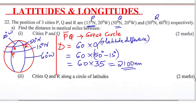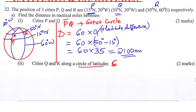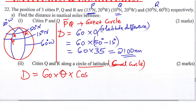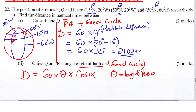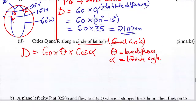Now the second part — the distance between Q and R along a circle of latitude. A circle of latitude is the small circle, so this is the distance along the small circle. Q and R are lying on the same latitude but different longitudes. The formula for distance in nautical miles is: distance equals 60 multiplied by the longitude difference, multiplied by the cosine of alpha, where alpha is the latitude angle.